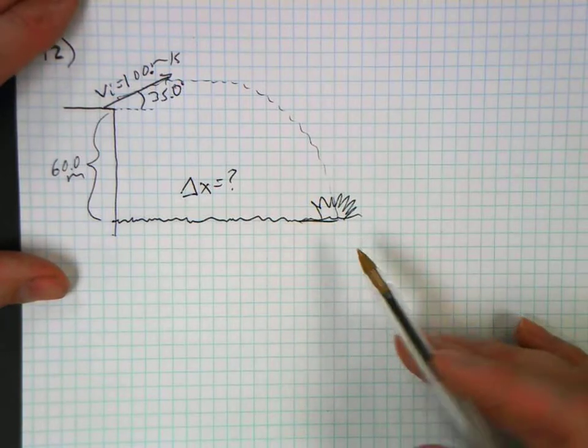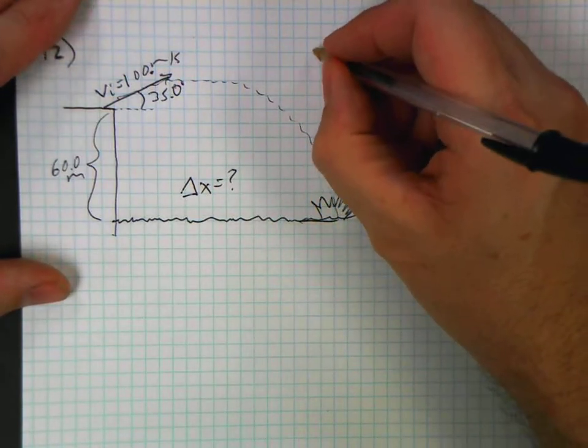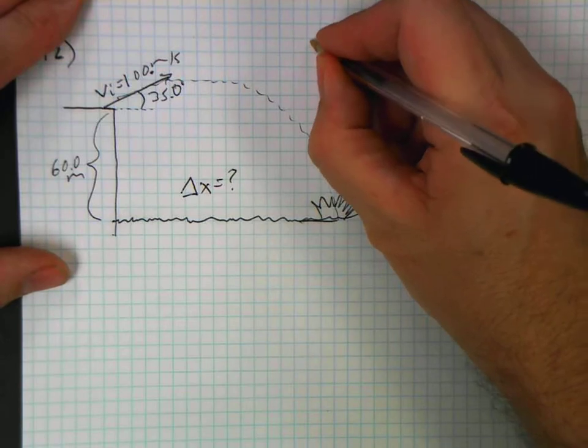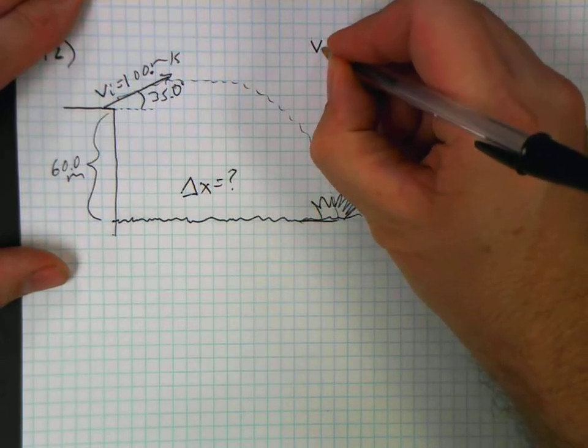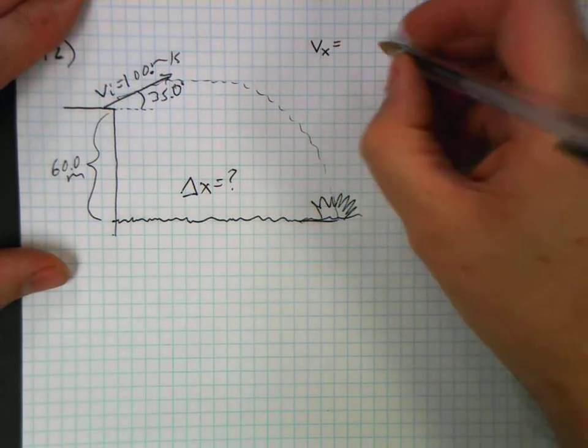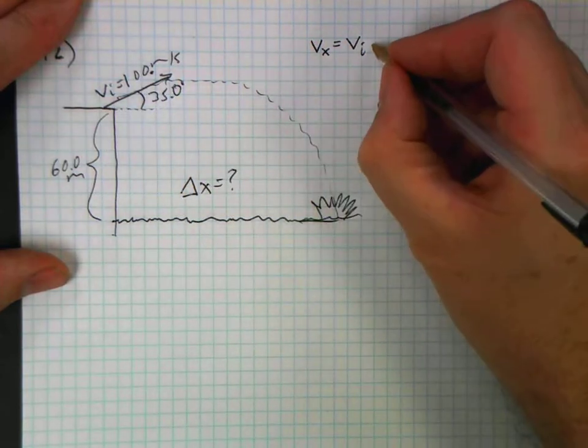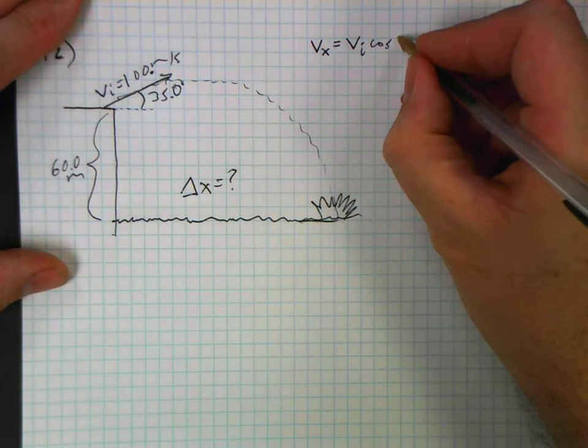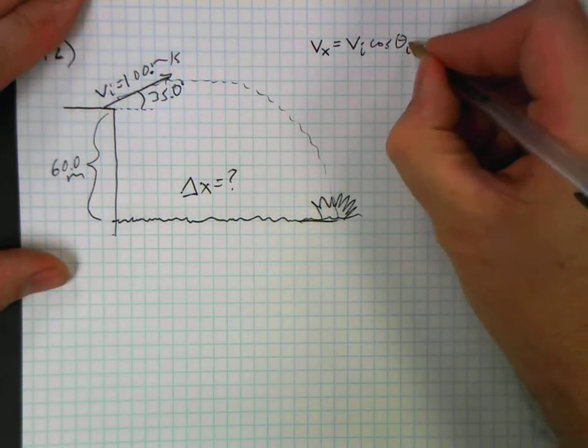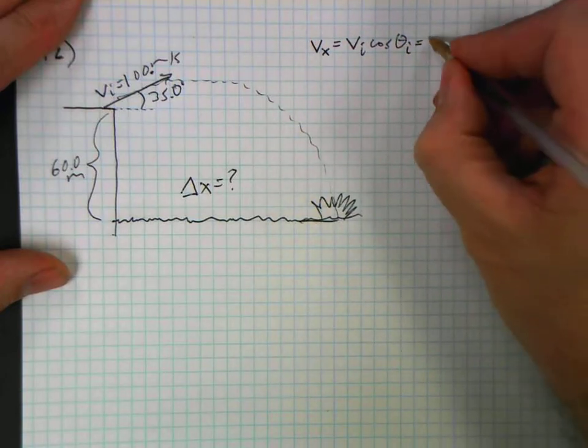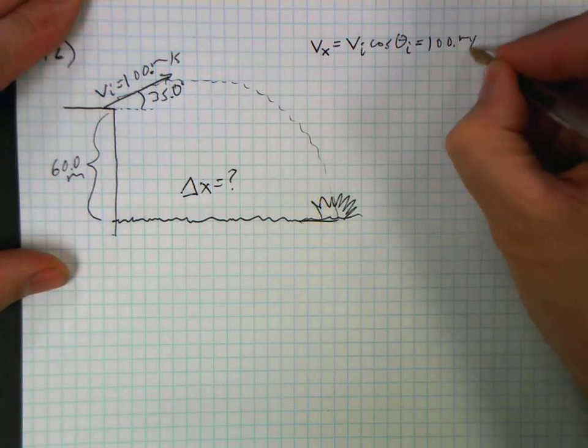So let's inventory everything. First things first, we want v sub x. V sub x is the initial, the adjacent side, so cosine of our initial angle. That's 100 meters per second multiplied by the cosine of 35.0 degrees.